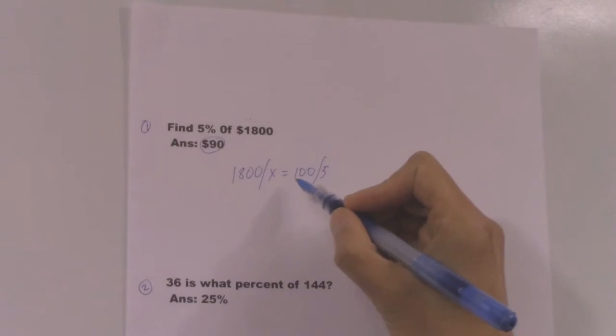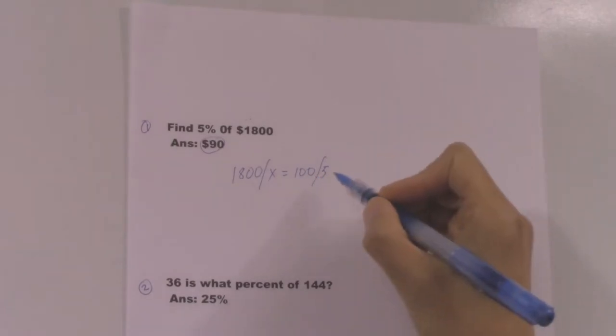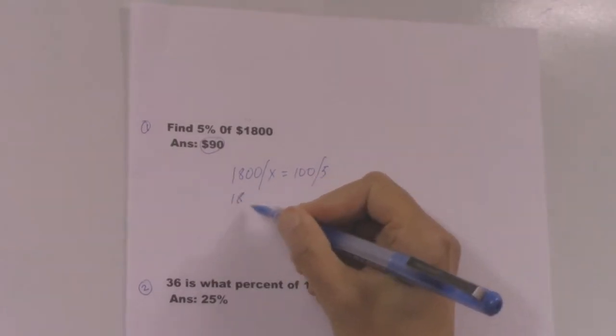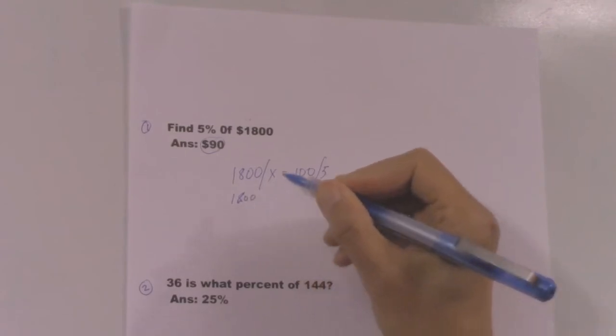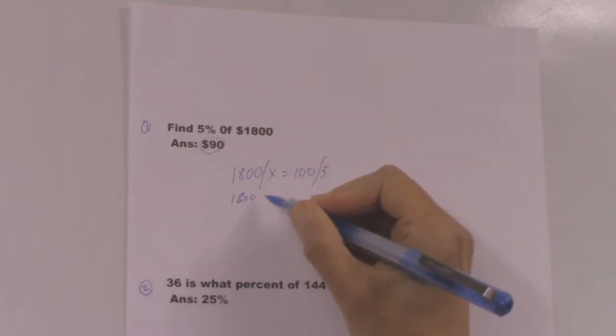Number one: find 5% of $1800. We set up 1800 times x equal to 100%, so 1800 times x equal 100%.